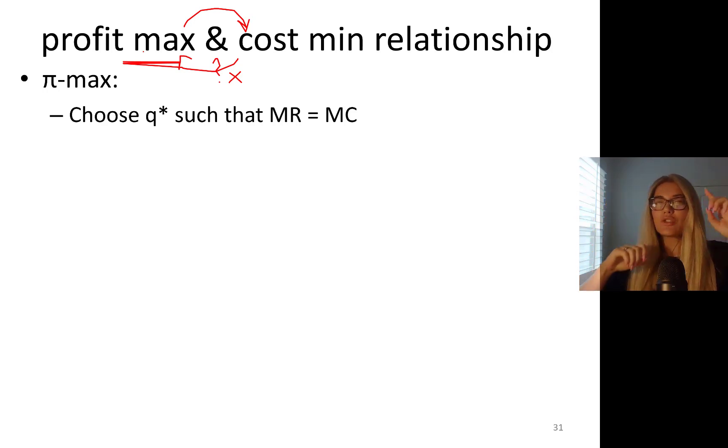Because when you're trying to produce something at the minimum cost, did you choose your output level? Is your output level the profit maximizing output level? That's the question. So profit maximization involves choosing an output level such that marginal revenue equals marginal cost.